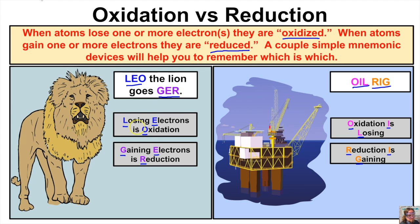Oxidation is losing electrons, and gaining electrons is reduction. Oxidation is losing, reduction is gaining. Let's apply this concept to several different chemical reactions and learn how to determine which elements are being oxidized and which are being reduced.